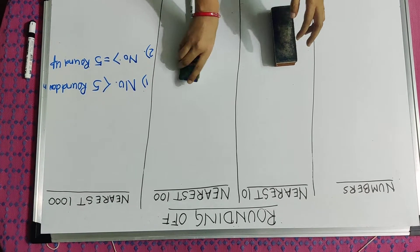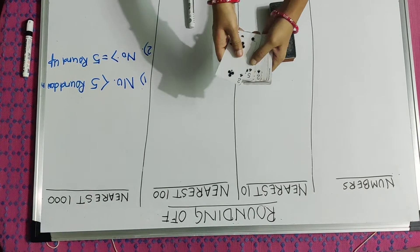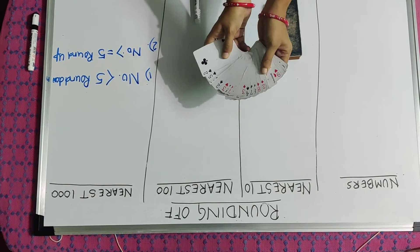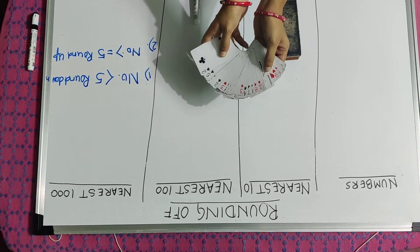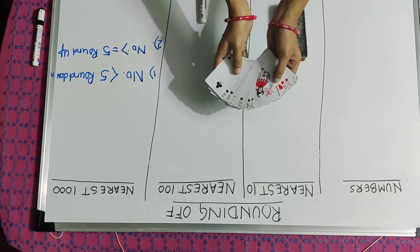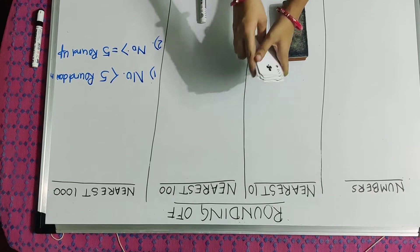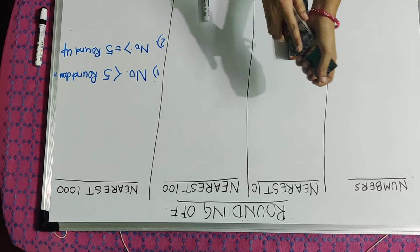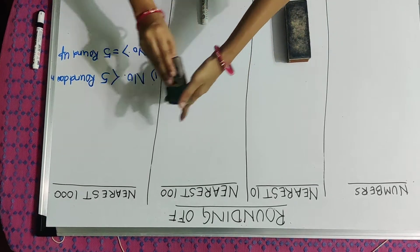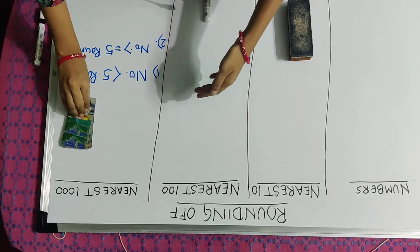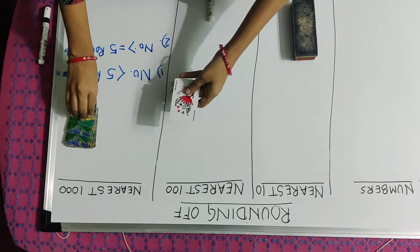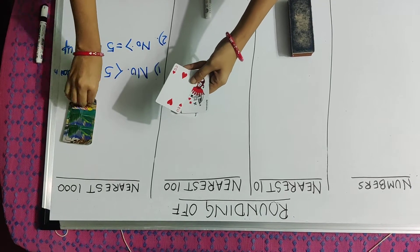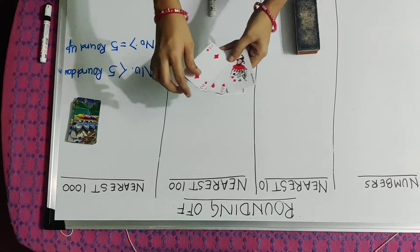Now I have a deck of cards. From this deck of cards I have taken only single digit numbers and the joker. I will consider joker as 0. Now I will shuffle it and I will pick 5 cards one time to form my number: 1, 2, 3, 4, 5.